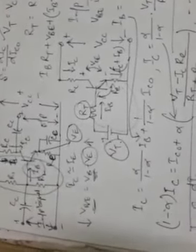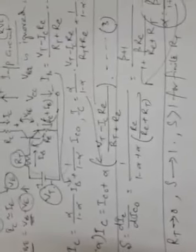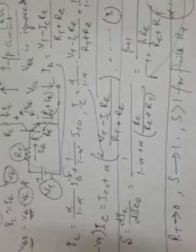So in this lecture we have seen how to derive the stability factor formulas for three different types of biasing techniques. You need to remember the stability factor formula for each and every biasing technique.